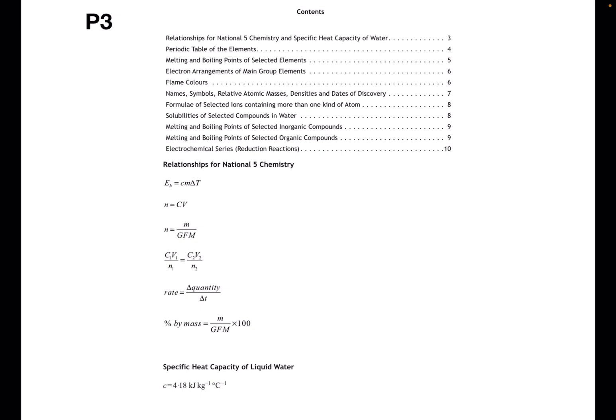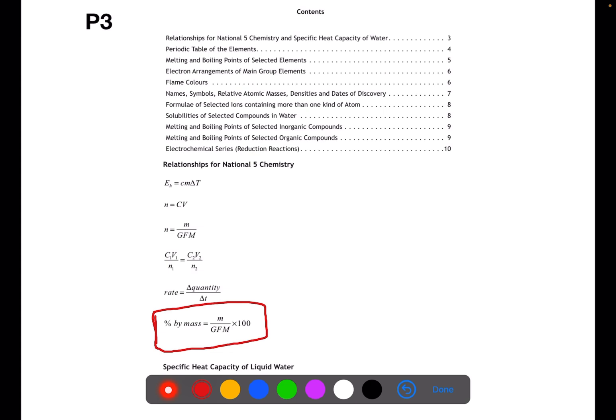On page three you will find the contents page for the data book. You can use this if you know what you're trying to find within the data book to find the correct page. Although it says relationships for National 5 Chemistry, you may have to use this relationship here, percentage by mass, so this is one relationship that is relevant for National 4 Chemistry.